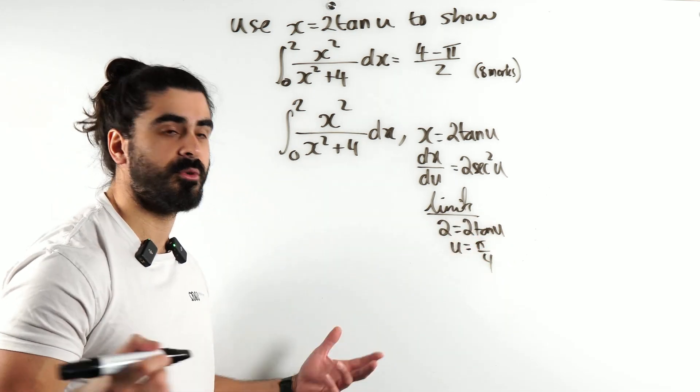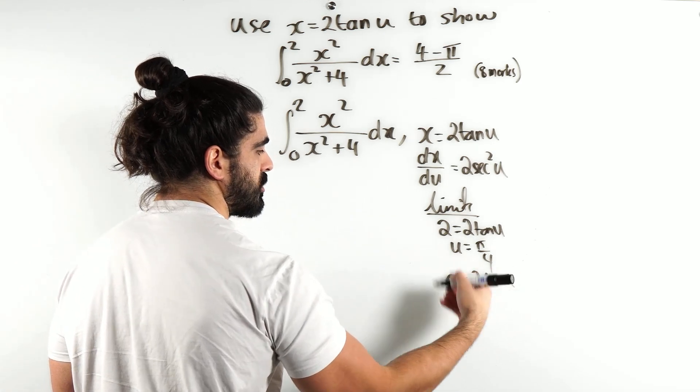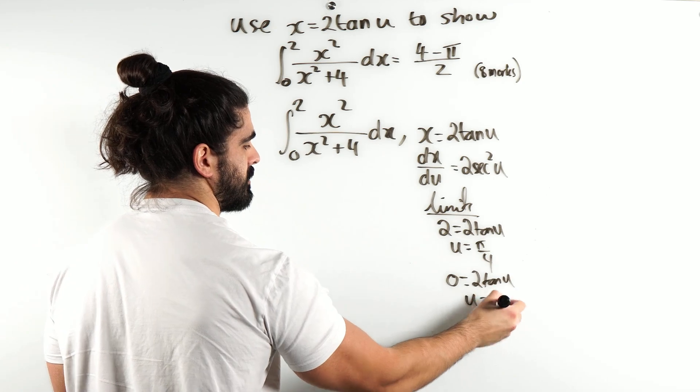Remember, with calculus we're always working with radians. So we have 0 = 2tan(u). Divide by 2, we get 0, inverse tan of 0 is just 0.